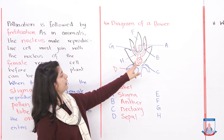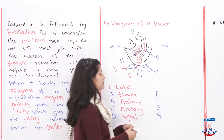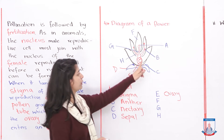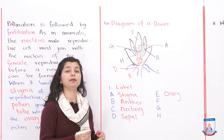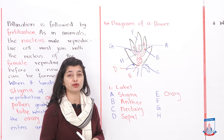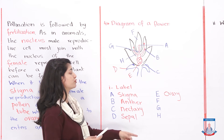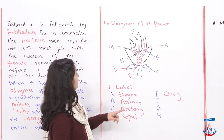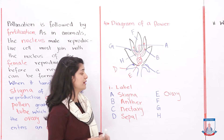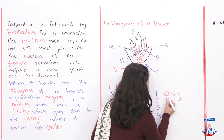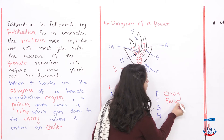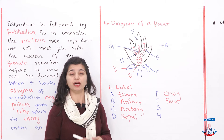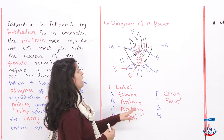Moving on, part E is the ovary — where fertilization occurs and fruit is eventually formed, so we label it E. Part F is the petal. Flowers have petals that are colorful and fragrant, and their purpose is to attract insects. So F is the petal.